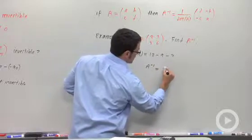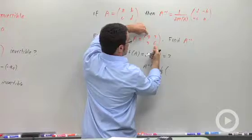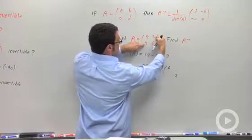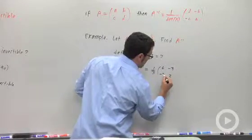So A inverse equals one third. And then I take the entries, these diagonal entries, and I switch them: 6 and 2. And these guys, I take their opposites: negative 3, negative 3.